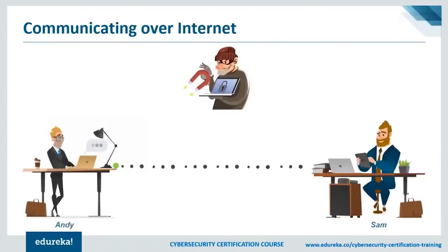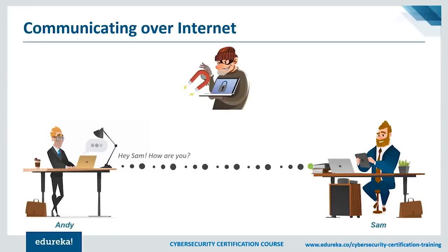I'm going to use an example to explain what cryptography is. Let's say we have a person called Andy. Suppose Andy sends a message to his friend Sam, who is on the other side of the world. Obviously he wants this message to be private and nobody else should have access to it. He uses a public forum — for example, the internet — for sending this message. The goal is to actually secure this communication.